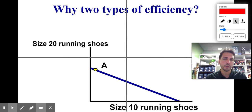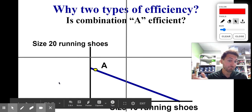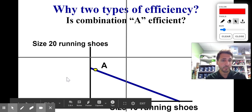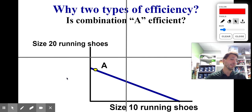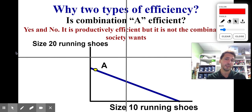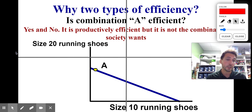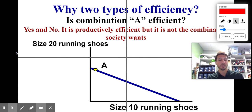Let's look at size 20 running shoes versus size 10 running shoes. At combination A, I'm producing a lot of size 20 running shoes and very few size 10. Is it productively efficient? Is it on the curve? Yes — productively efficient. Is it allocatively efficient? Probably not, because most people do not have size 20 feet, so I'm producing things society doesn't want. It's productively efficient but not allocatively efficient. Bonus round: notice it's a straight curve — so what kind of opportunity cost do we have? Constant, because the same resources used to produce size 10 running shoes are used to produce size 20 running shoes.